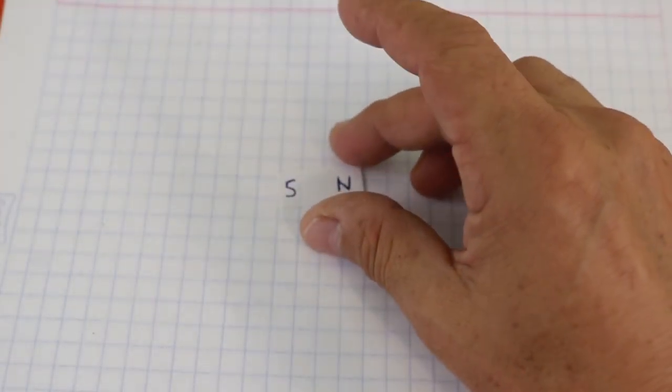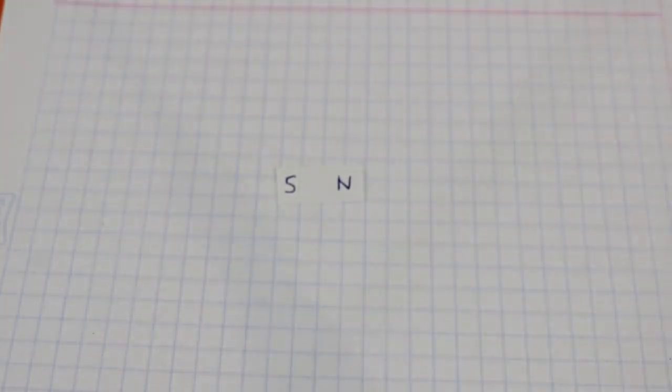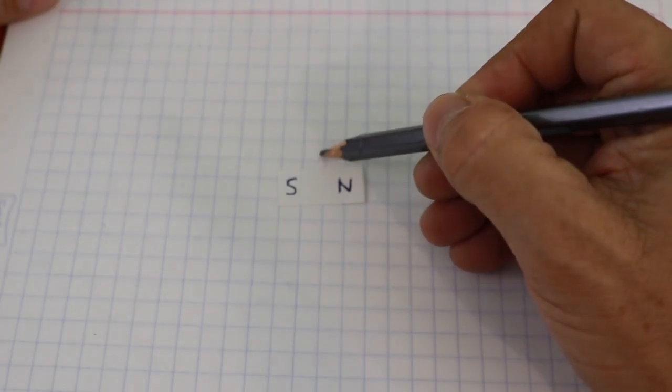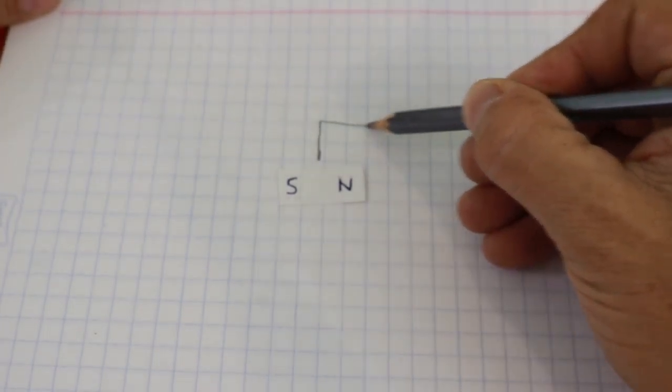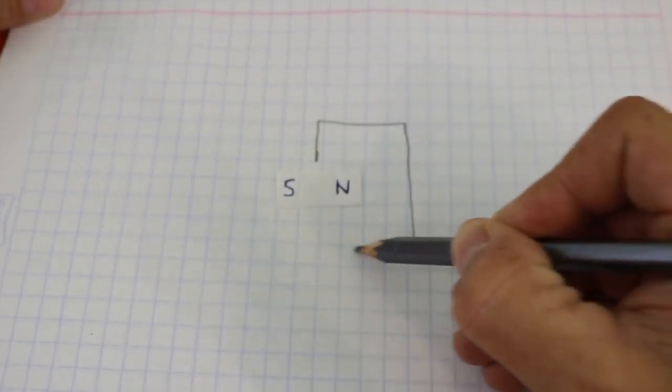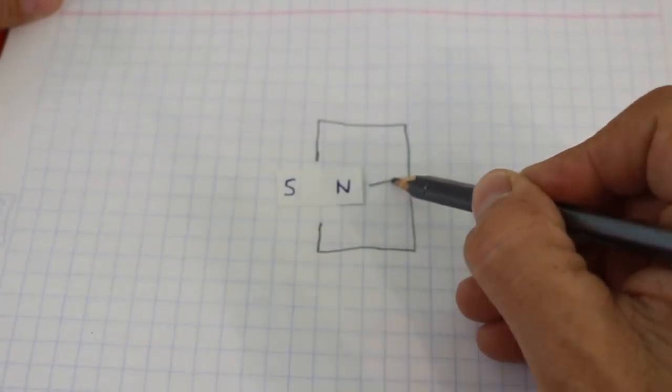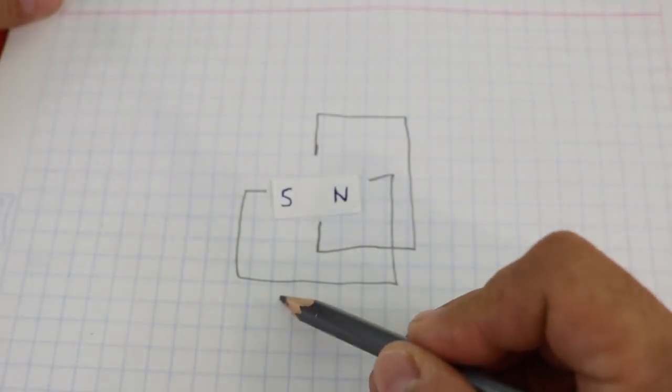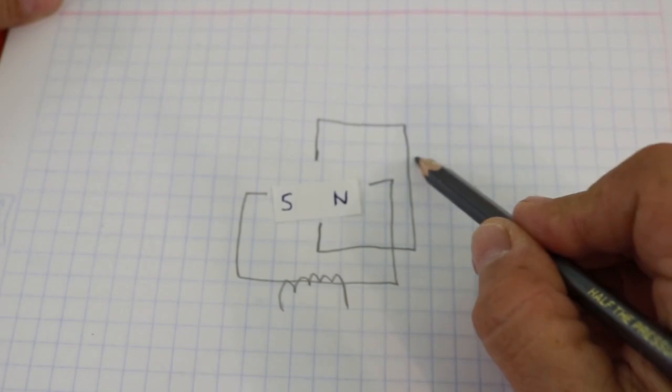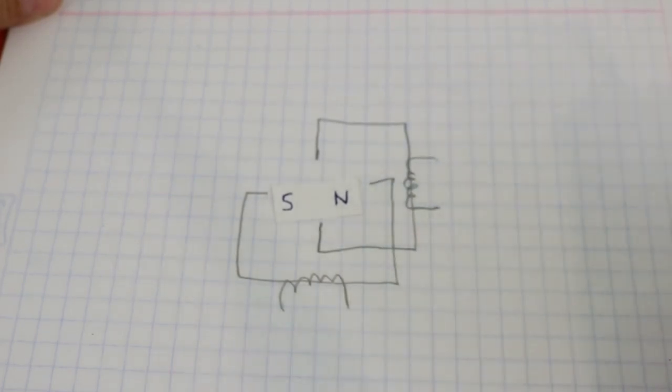The stepper motor works in the following way. The rotor is a permanent magnet and we have a set of magnetic cores. In the simplest case, we have two cores and coils around the cores in order to magnetize the cores.